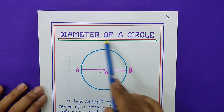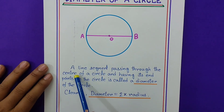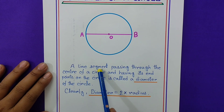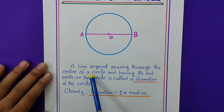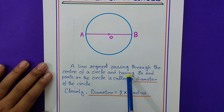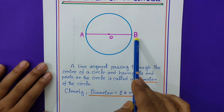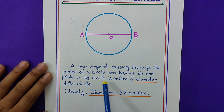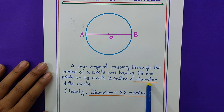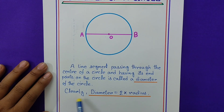Page number 3: diameter of a circle. A line segment passing through the center of the circle and having its endpoints — A and B are the endpoints — on the circle is called the diameter of the circle. Here AB is the diameter of the circle.